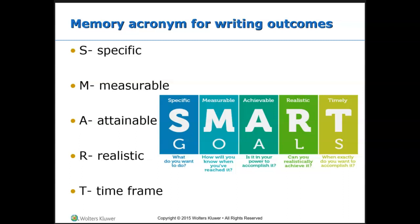I cannot stress enough how important this is — you need to make sure all of your outcomes have SMART goals. Specific: what does the patient want to achieve? What are we doing here, what is our goal? Measurable: how will you know when you've reached it — how will we know that they actually reached that goal? Attainable: is it really within the power of the patient and the team to accomplish this goal?